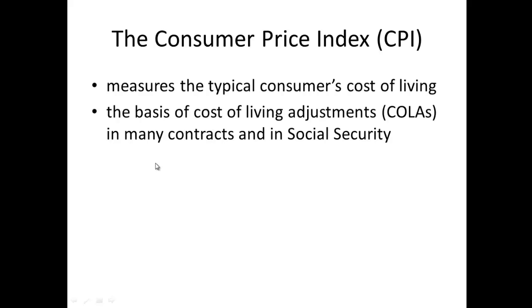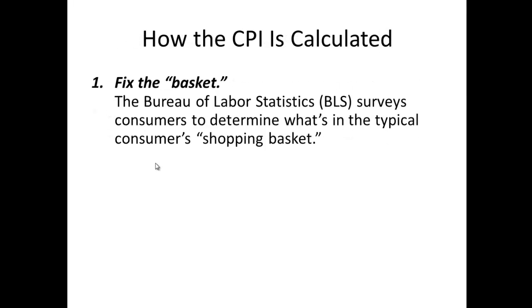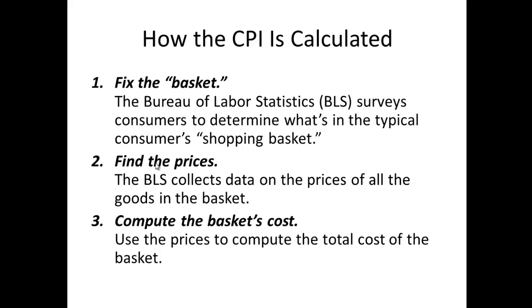In order to measure the cost of living — how much does it cost to live in an economy — we use a measurement called CPI, or Consumer Price Index. The CPI is measured by a government agency, the Bureau of Labor and Statistics. This indicator, the CPI, is done monthly, quarterly, and annually. There are five steps we use to calculate this economic indicator.